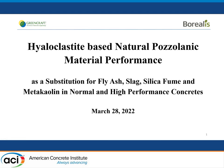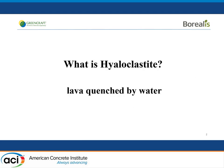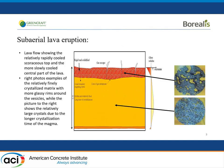Hyaloclastite-based natural pozzolan as a substitute for fly ash, slag, silica fume, or any other pozzolan. What is hyaloclastite? It is lava quenched by water — nature's way of similarly producing what you would call blast furnace slag.